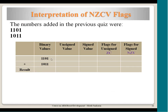The overflow flag indicates whether the signed result after the operation can fit into the available bits. Here the overflow flag is clear because minus 8 can be accommodated within 4 bits. In hardware, overflow is computed by XOR-ing the carry out of the MSB bit with the carry out of the bit just below it. If these two carries differ, the overflow flag is set. In this case, the two carries are the same, so overflow is clear — the signed arithmetic result is valid within the bit width.